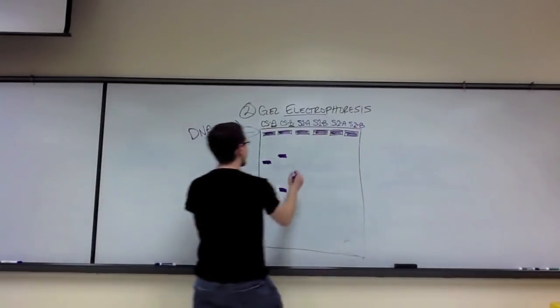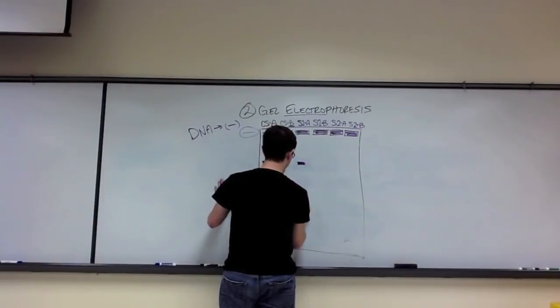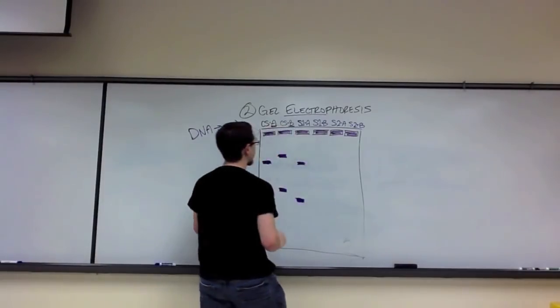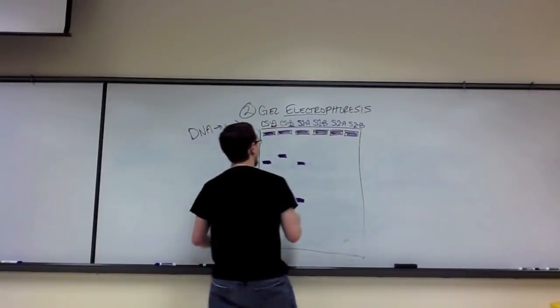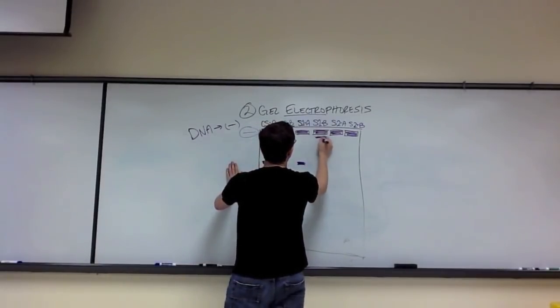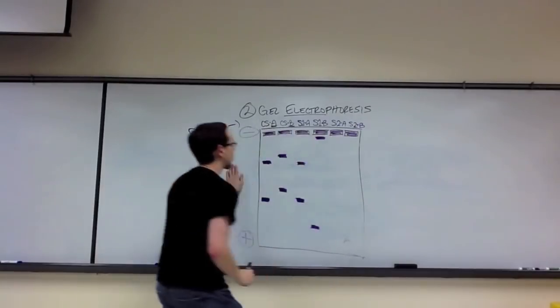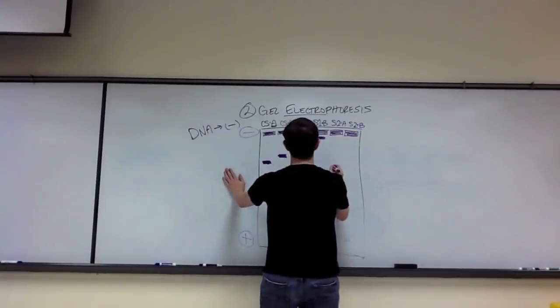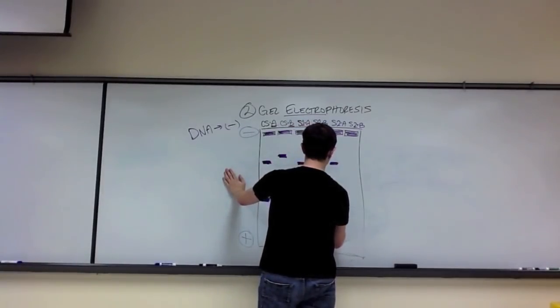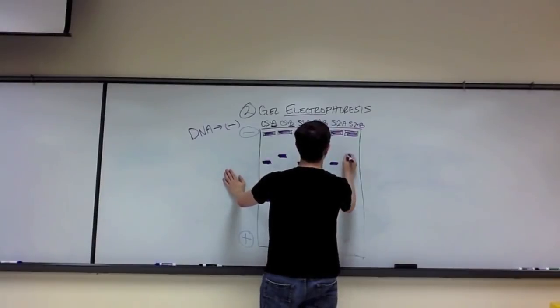So, let's say suspect 1's first lane looks something like this, and his second lane cut with B looks something like this. And then suspect 2 is going to look like this, and then this.